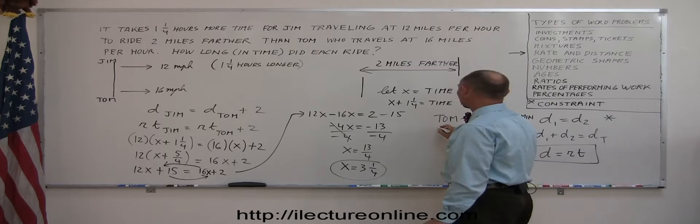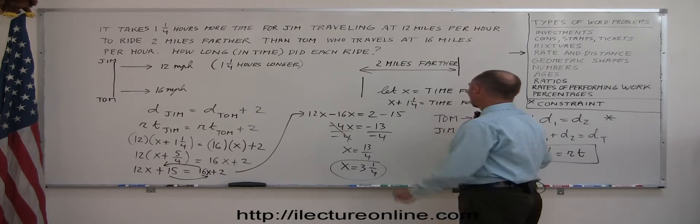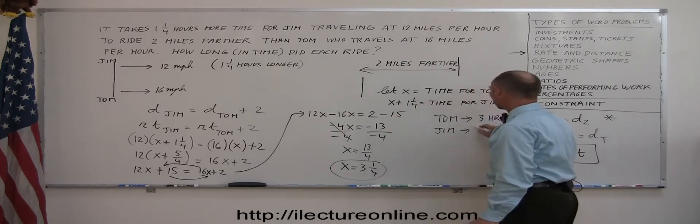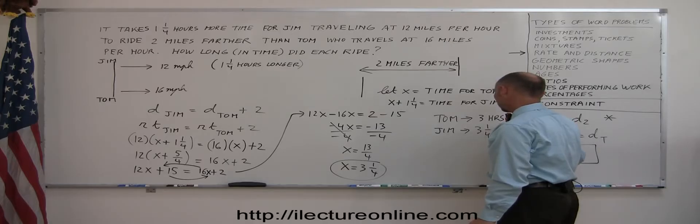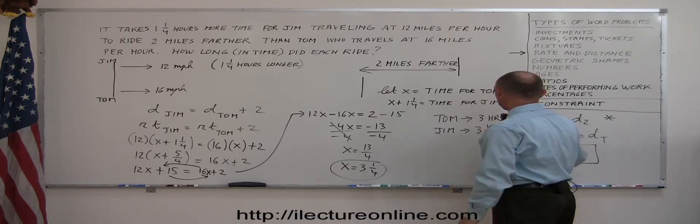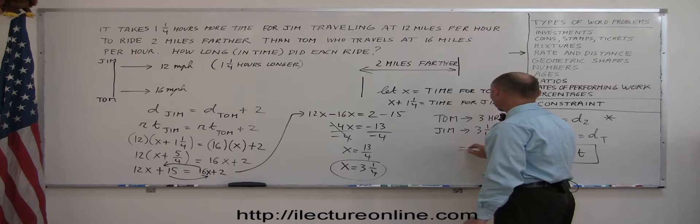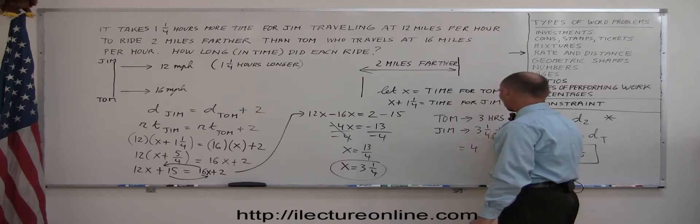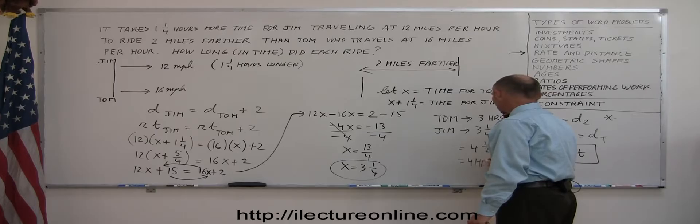Here we go. Now we combine like terms. 12x minus 16x is minus 4x equals 2 minus 15, which is minus 13. Then divide both sides by the numerical coefficient in front of the x. In this case, that's a minus 4. That cancels out. We have x equals 13 over 4.